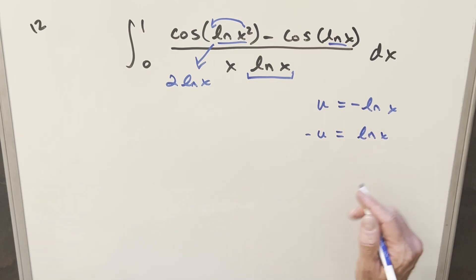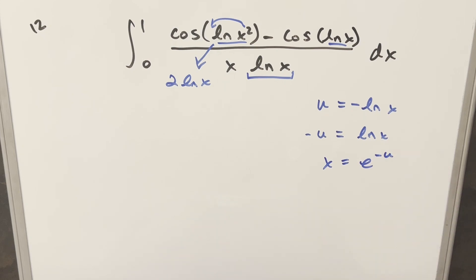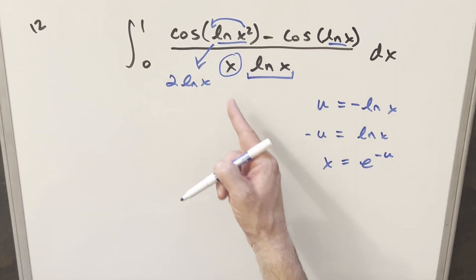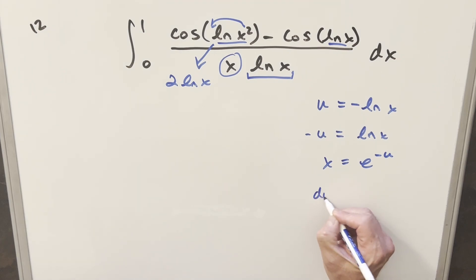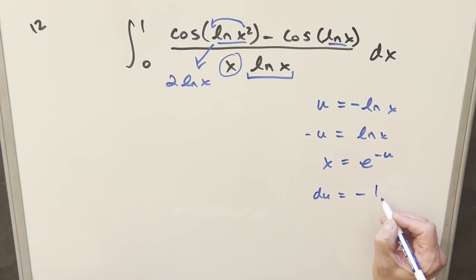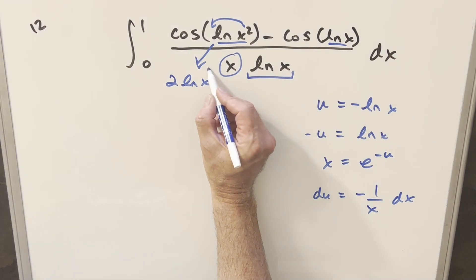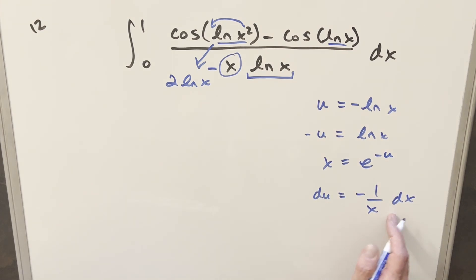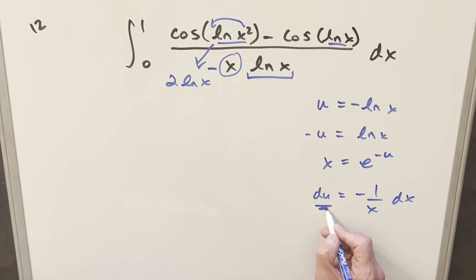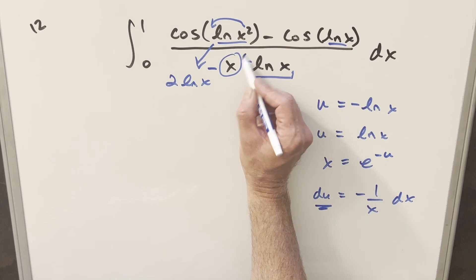Solving for x, we have x equals e to the minus u. And because we have 1/x in the integrand, let's take the derivative. For du, we're going to have minus 1 over x dx. So I'm going to multiply a minus sign in here — this gives us the minus 1 over x dx for our du — and then multiply a minus sign out front to compensate.